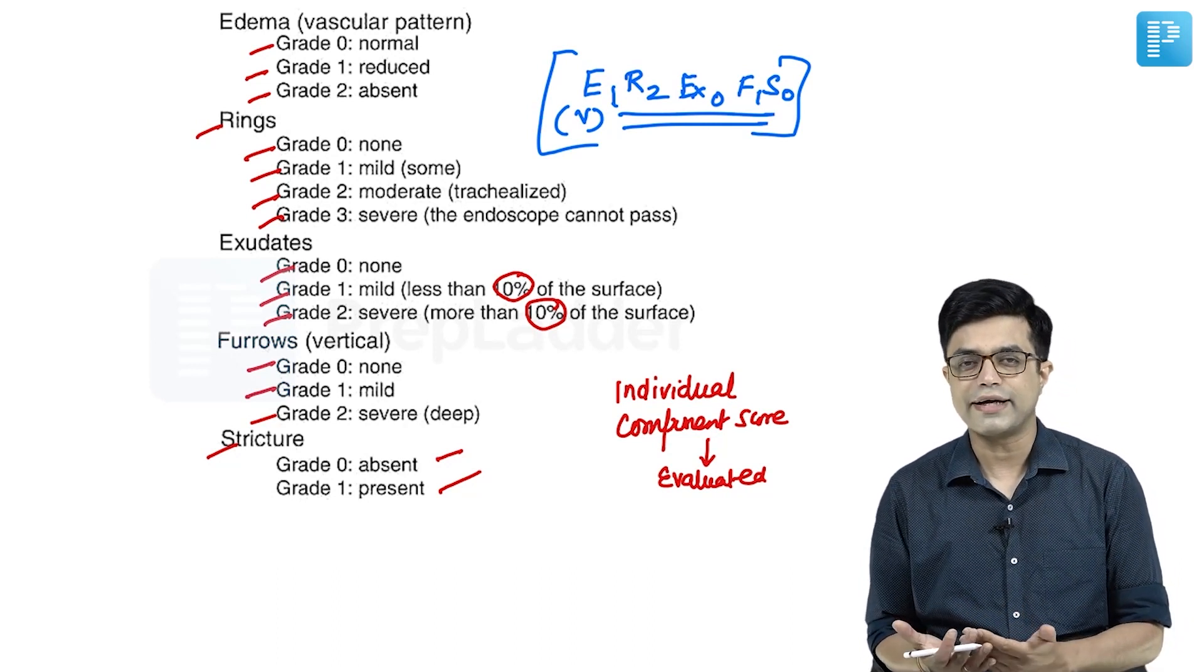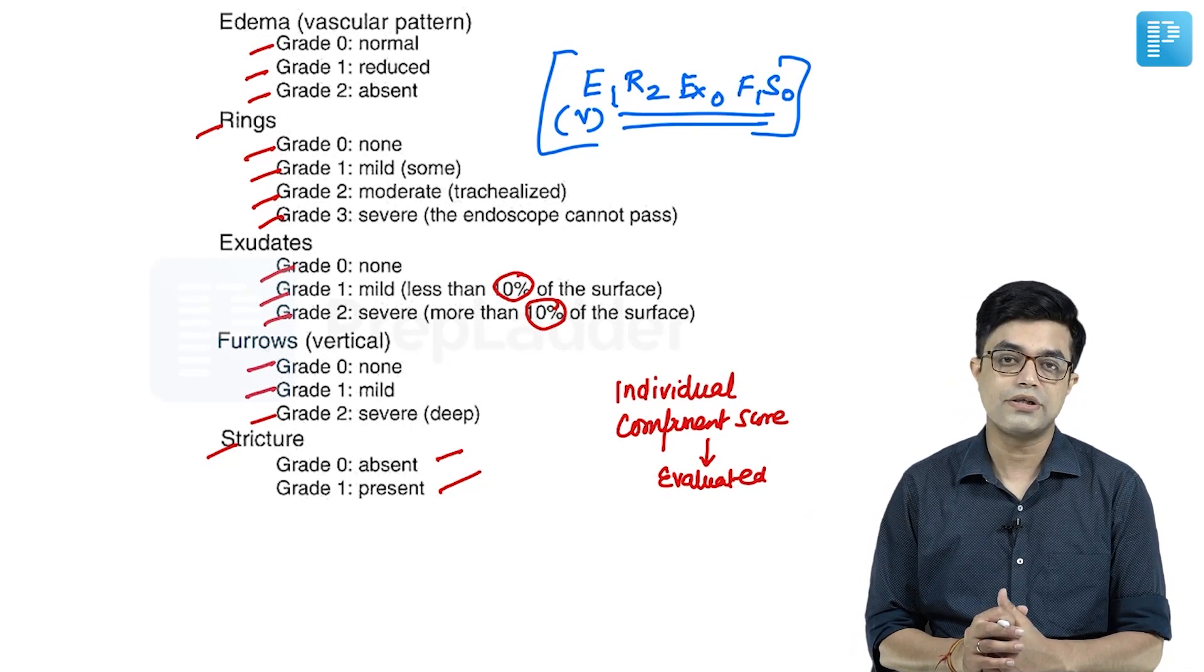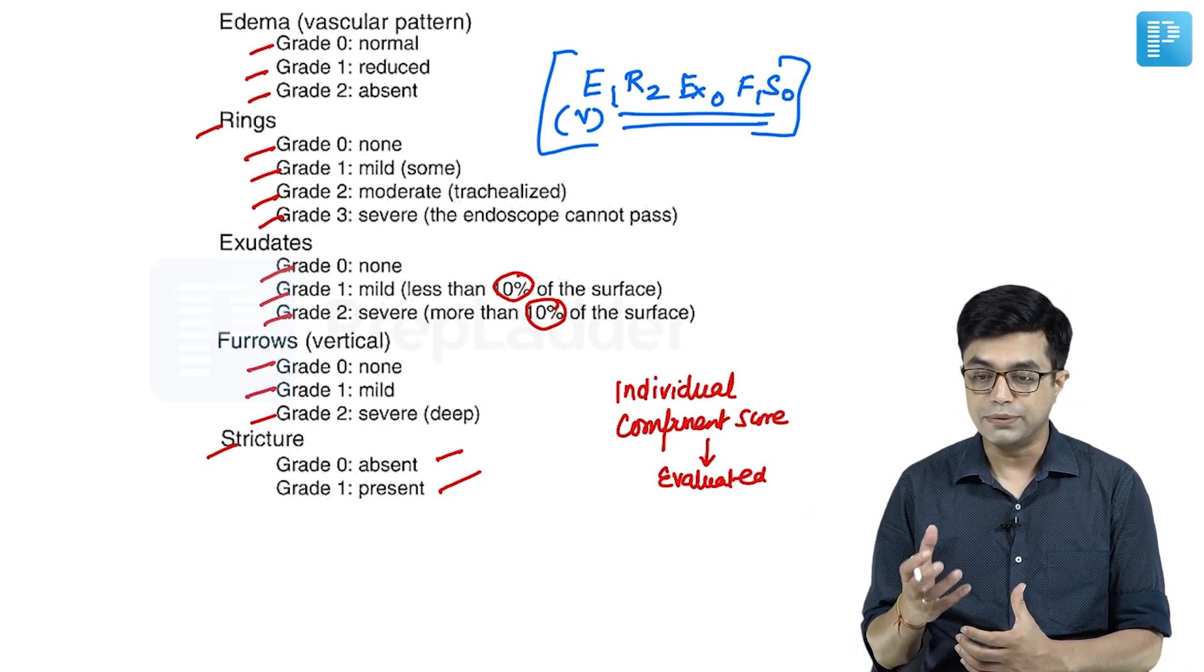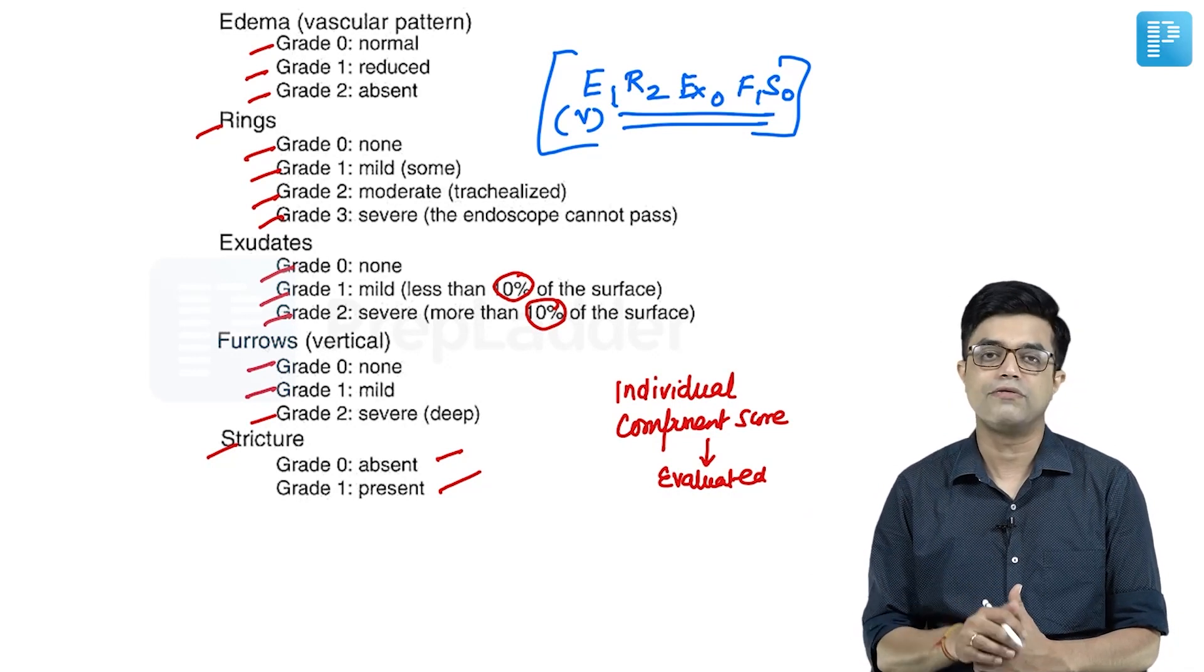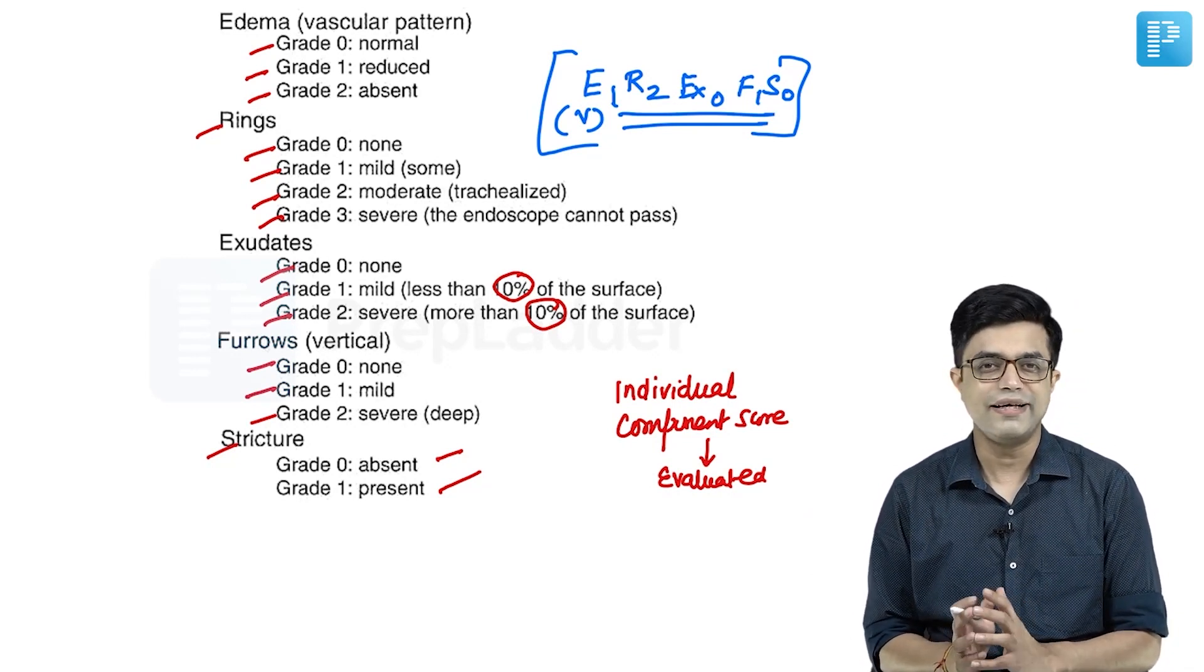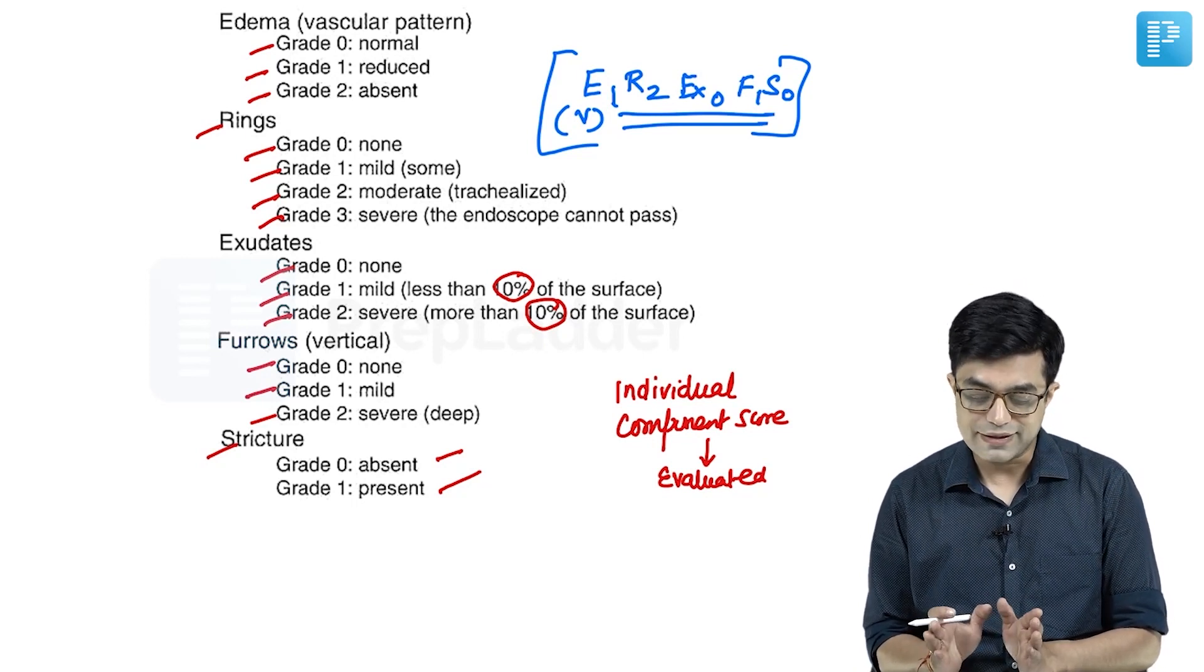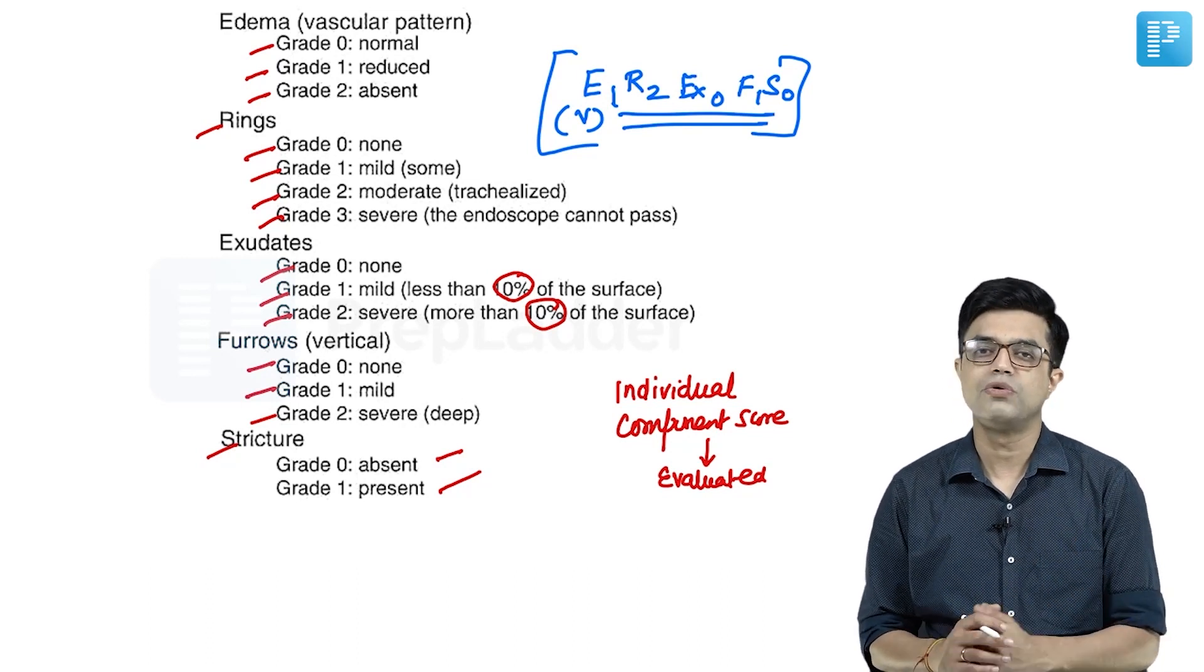The problem is it requires endoscopic evaluation. Single score is not accurate; you need multiple serial endoscopic examinations and a person well-equipped with managing EoE. Utility in the Indian system is still dicey. Nelson mentions two lines about this score.